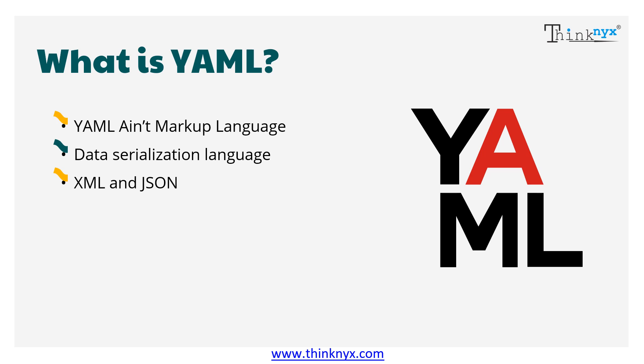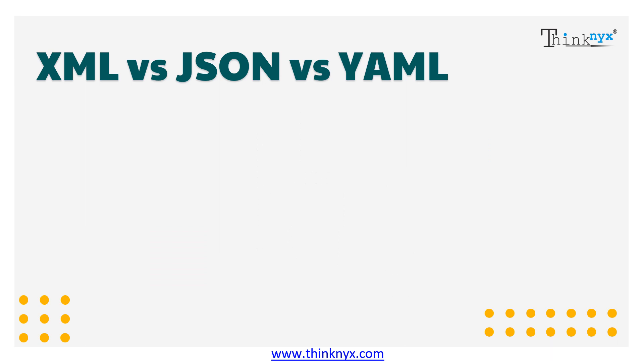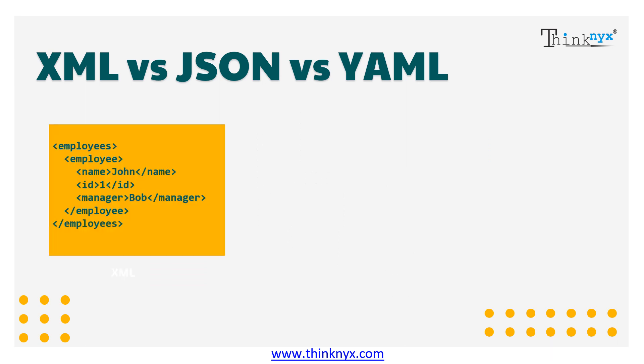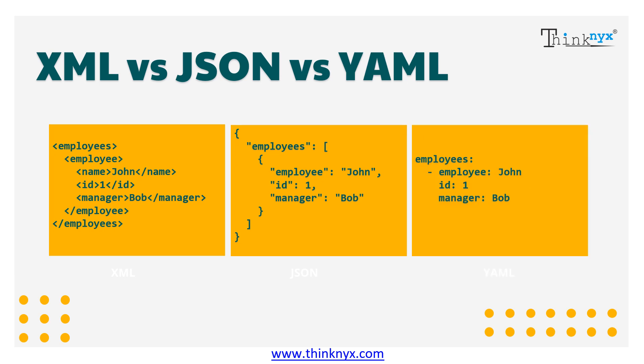Other examples of serialization languages are XML and JSON. YAML is quite similar to these languages. Let's now compare YAML with XML and JSON. In an organization there would be many employees. Let's consider an employee by name John. We would be using John's details like his name, ID, and his manager whose name is Bob. This is how we represent John's details in XML and JSON. This is how we represent the same using YAML. As we can see, all three are quite similar.